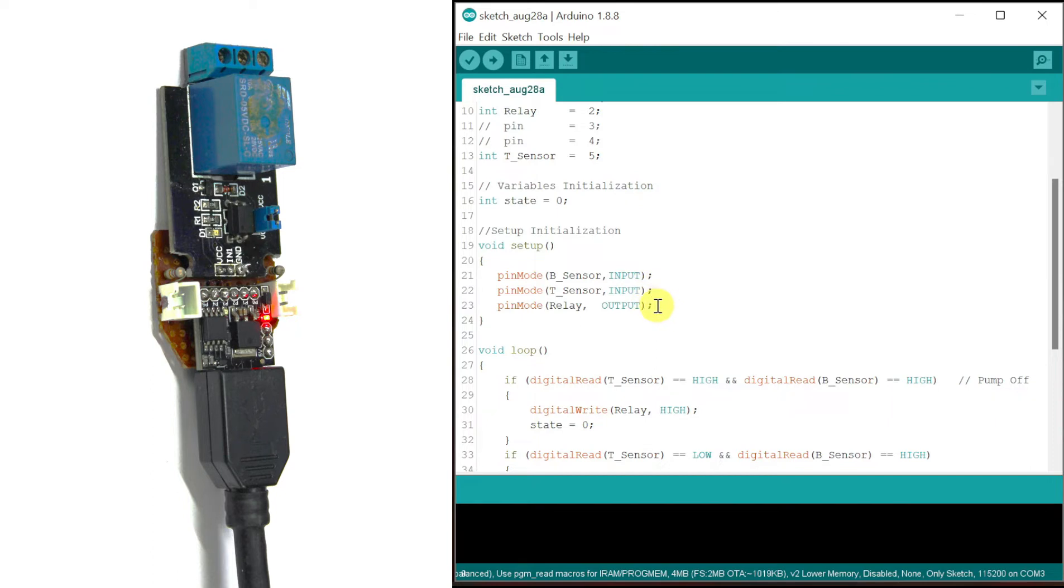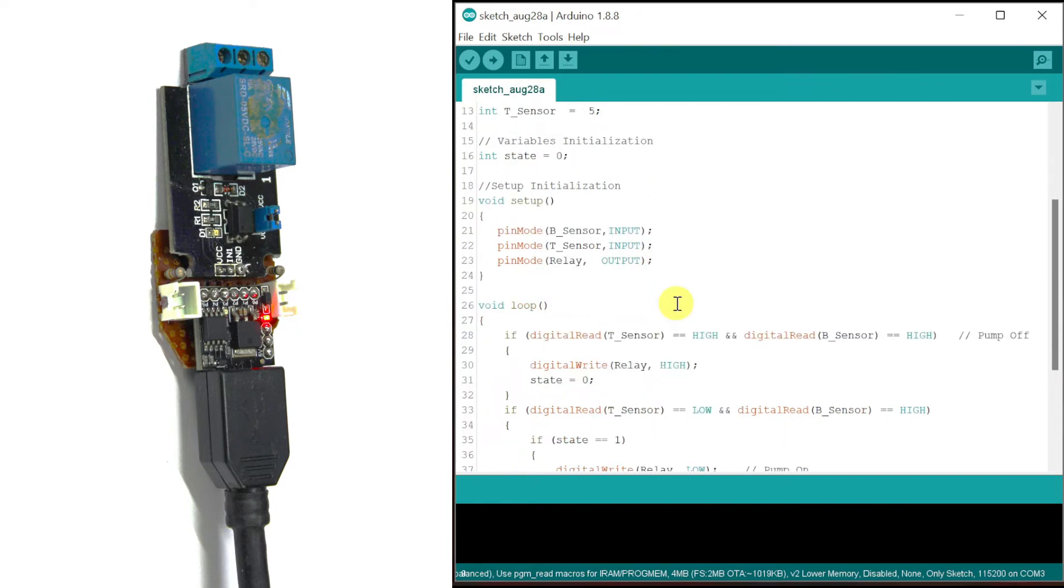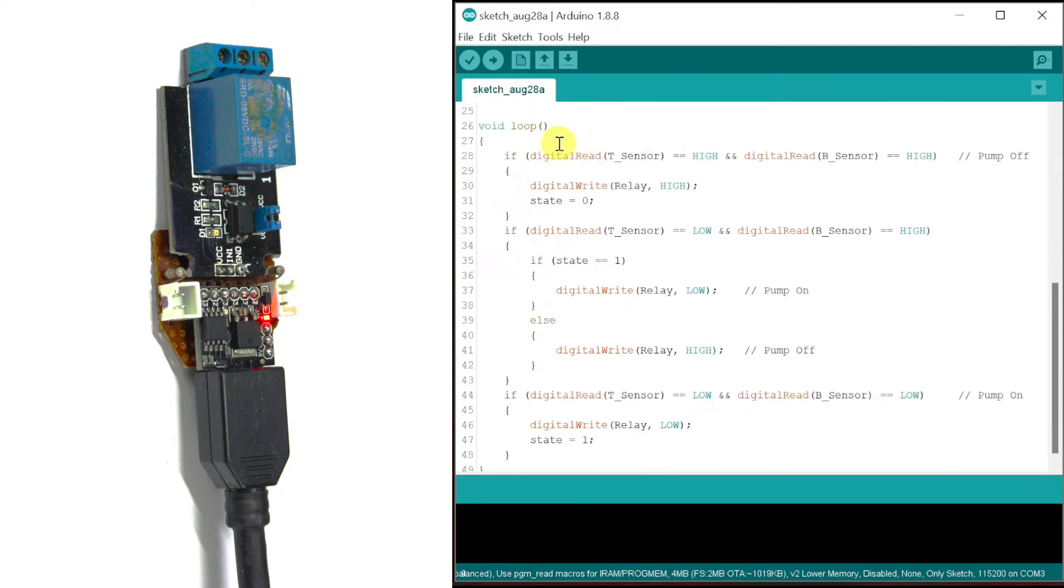Inside the setup, the two float sensors are declared as input and the relay as output.